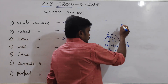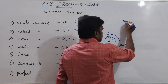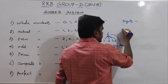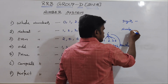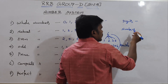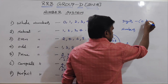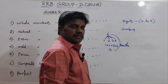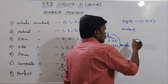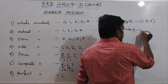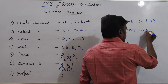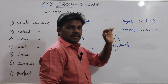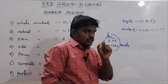Now, digits and numbers — what is the difference? Digits are 0 to 9. Numbers mean 1, 2, 3 and so on. So digits are only 0 to 9, while numbers extend beyond.